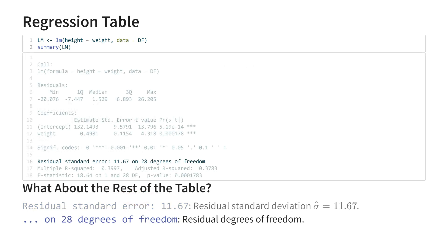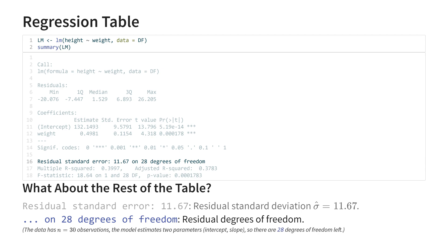The next part shows the residual degrees of freedom. Residual just means what is left behind, so this shows you how many degrees of freedom we have left. The more observations you have, the more parameters you can estimate. The residual degrees of freedom shows how much freedom you have left to estimate additional parameters — something that will become important once we start adding more explanatory variables, called multiple linear regression. To show you where this number comes from: we had 30 observations and we estimated two parameters, the intercept and the slope, so there are 28 degrees of freedom left.